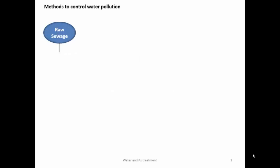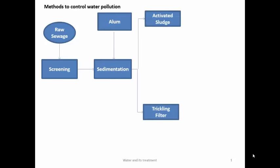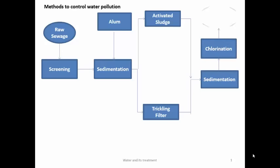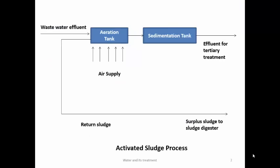Methods to control water pollution: raw sewage is first passed through screening, then sedimentation — where alum or coagulant is added to settle the precipitate. Then it is treated via activated sludge method or trickling filter method (activated sludge is widely used), followed by another sedimentation, then chlorination, yielding treated discharge. These involve primary anaerobic and secondary aerobic processes.